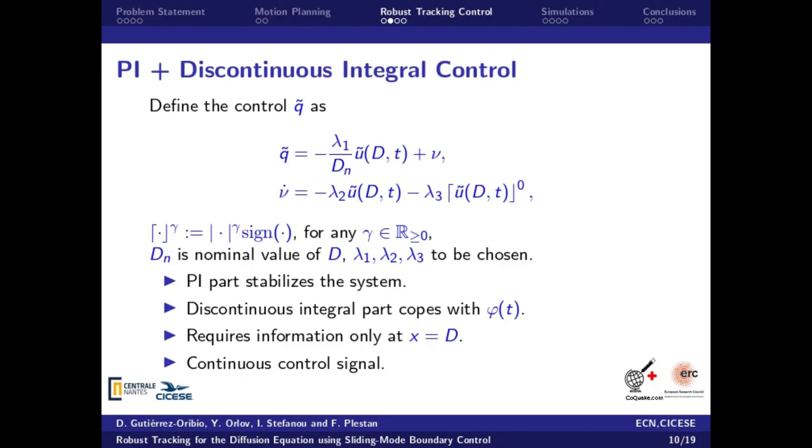The PI terms will stabilize the system origin, whereas the discontinuous term copes with the perturbation. This algorithm only requires the feedback from the boundary x equal to d, and it generates a continuous control signal, reducing the chattering effect.